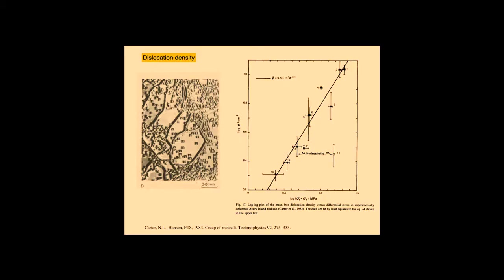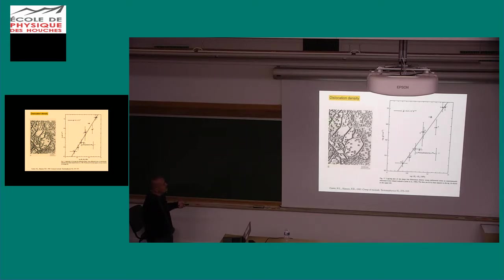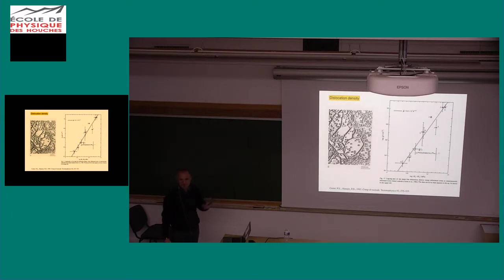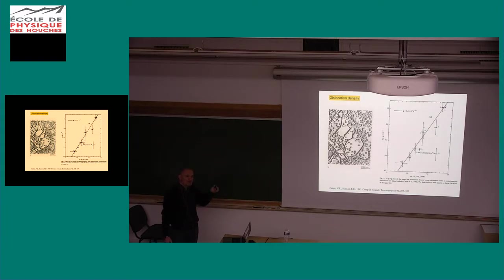The dislocation density was also measured using TEM techniques. This is a famous paper from 1983 by Carter and Hansen, and the dislocation density scales very nicely with differential stress as expected. All this work from the American laboratories was inspired by the need to create a waste disposal site for nuclear waste — a controversial but very actively researched topic. The point is this was fantastic work, but they didn't really have the tool to look at the grain boundaries — there was just no observational technique to do that.